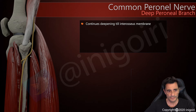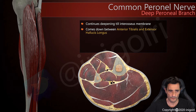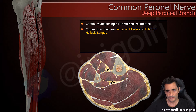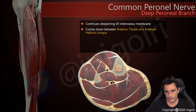The deep peroneal nerve continues deepening until it reaches the interosseous membrane. It is located below the muscles of the anterolateral compartment of the lower leg, between the tibialis anterior muscle and the extensor hallucis longus muscle, very close to the interosseous membrane and also very close to the anterior tibial artery at this level.